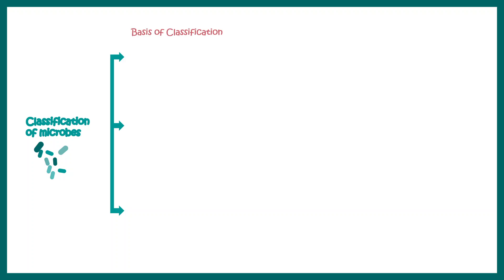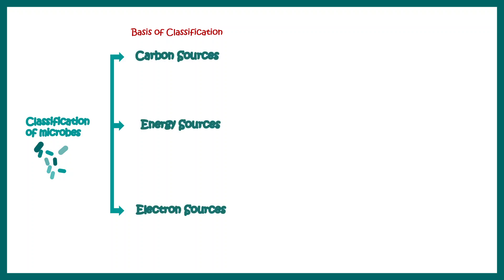Now let's talk about what is the basis of the classification. There are several criteria based on which we can classify them, such as the carbon sources they get, the energy sources, or the electron sources that they utilize. Based on carbon sources there could be two divisions.